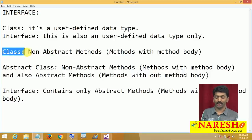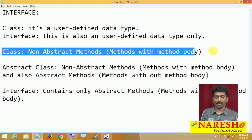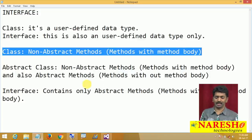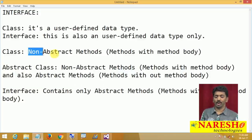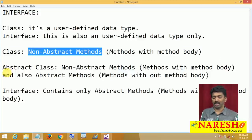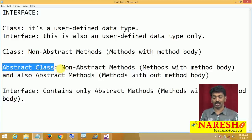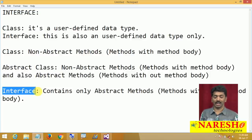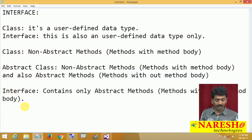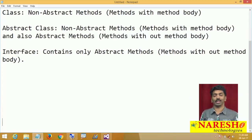So that is the difference. A regular class can contain only non-abstract methods. An abstract class contains non-abstract as well as abstract methods. But when you come to an interface, it contains only abstract methods and cannot contain any non-abstract methods — that is the basic difference.